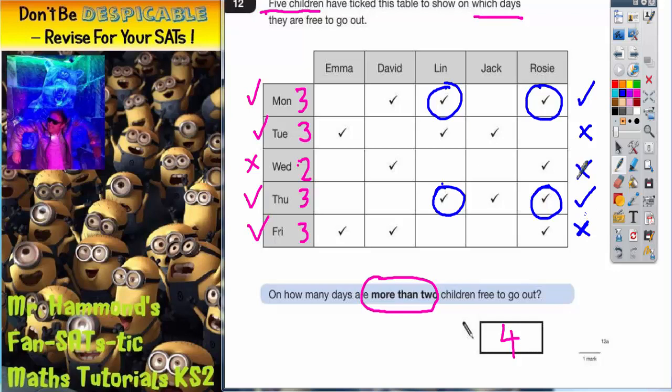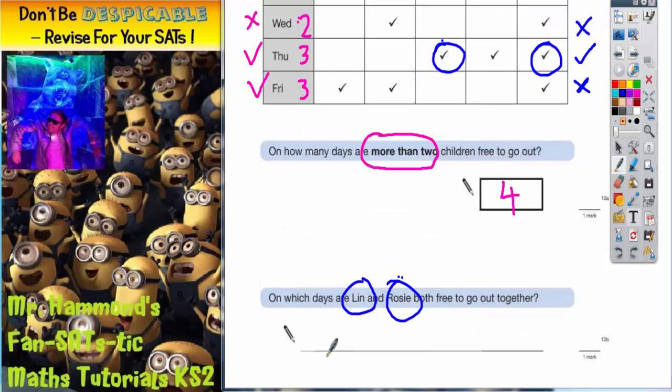So you can see the days where they can go out together are Monday we've ticked and Thursday. So they are the answers we need to write in: Monday and Thursday.